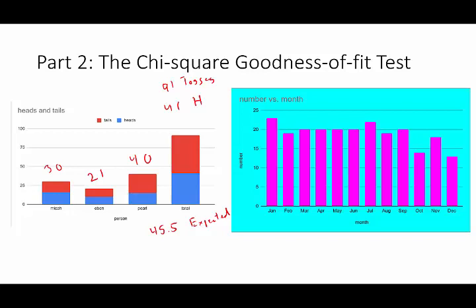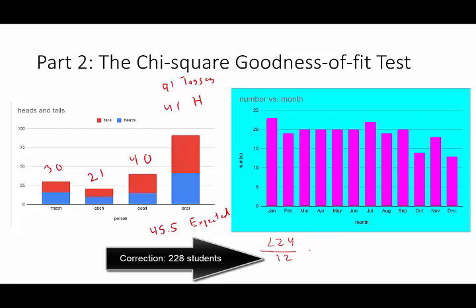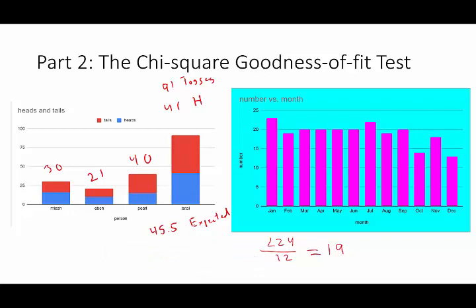Now the second experiment they did was to go through their school calendars and to count how many of their schoolmates had birthdays each month of the calendar year. There was a total of 224 students at their school and that happened to work out nicely to split up to 19 students per month.